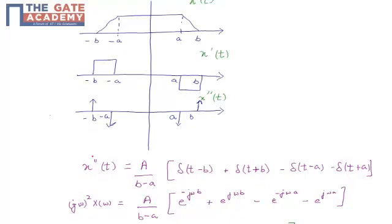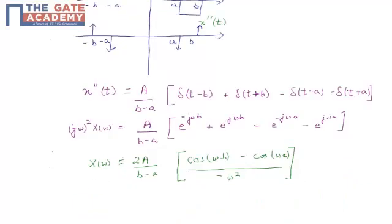We know that the second derivative's Fourier transform would be equal to j omega square x of omega equal to A by b minus a. The Fourier transform would be e raise to minus j omega b plus e raise to j omega b minus e raise to minus j omega a minus e raise to j omega a.